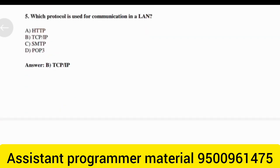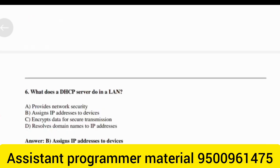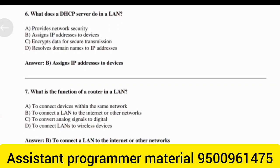Which protocol is used for communication in a LAN? Answer: Option B — TCP/IP. What does a DHCP server do in a LAN? Answer: Option B — Assigns IP addresses to devices.